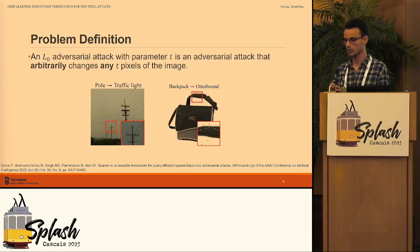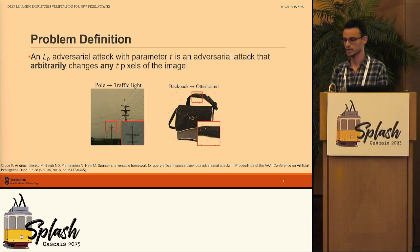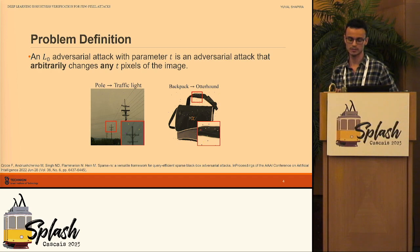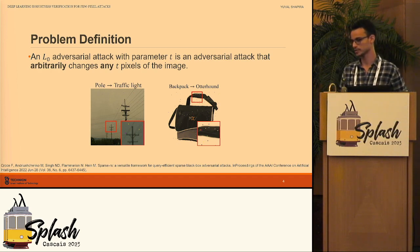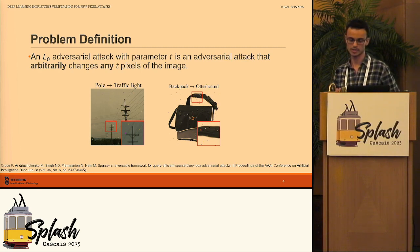In our work, we focus on a different kind of attacks: L0 attacks. Given a positive integer T, an adversary's goal is to find an adversarial example by changing at most T pixels of the image. For example, on the left there is a pole, and by changing a few dozens of pixels, it is misclassified as a traffic light. On the right, there is a backpack, which is also misclassified by changing a few dozens of pixels.